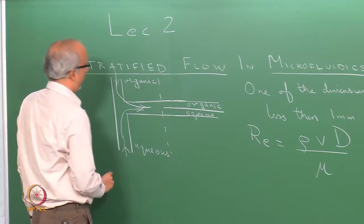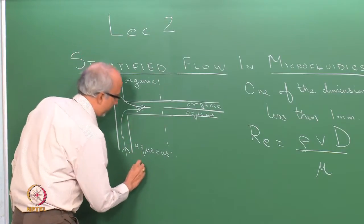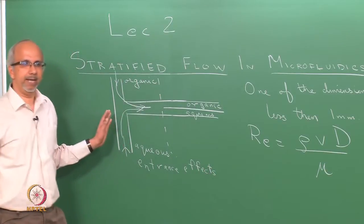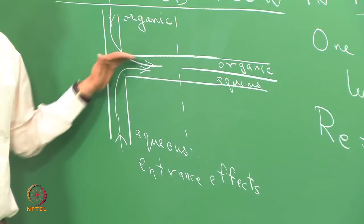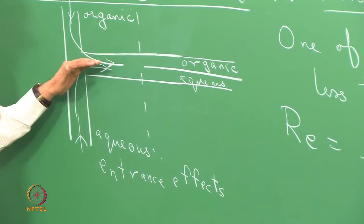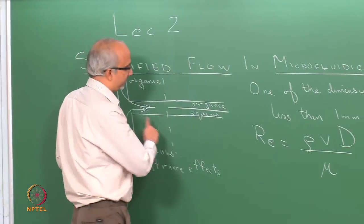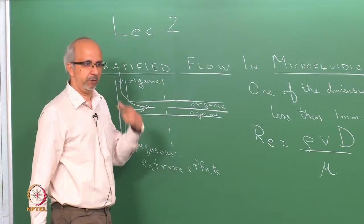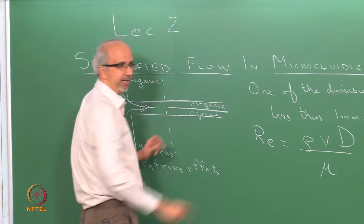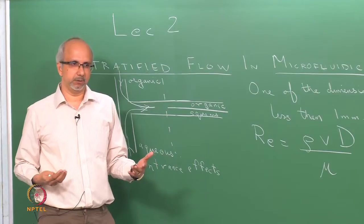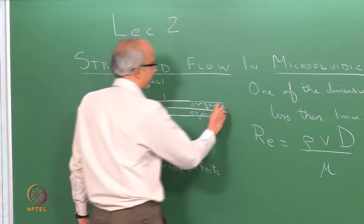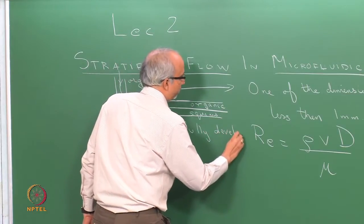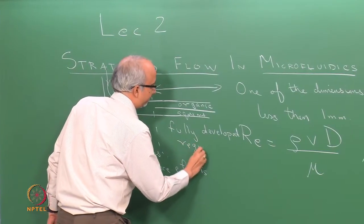The portion close to the inlet is where entrance effects occur, because the fluid has to negotiate the bend, and you could have some lateral interchange of mass and momentum. However, the entrance length is typically just a small fraction of the entire channel length. As engineers, we are interested in the fully developed region, which occupies a significant portion of the channel.